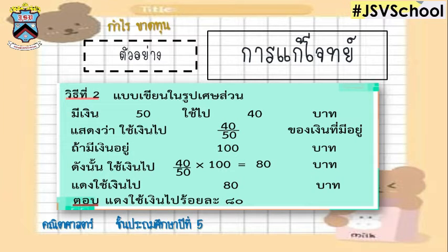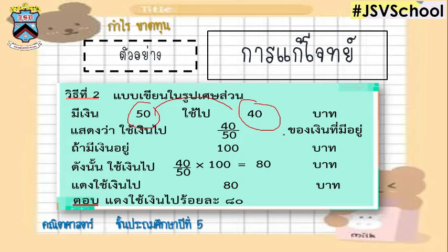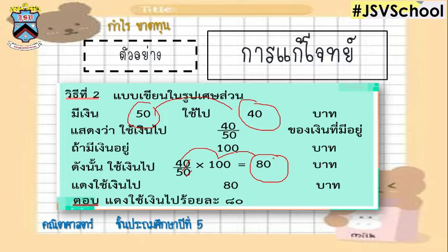เป็นการแก้โจทย์โดยใช้แบบรูปการเขียนเศษส่วนค่ะ ก็คือมีเงินอยู่ทั้งหมด 50 บาทและถูกใช้ไป 40 บาท นั่นแสดงว่าใช้เงินไปเป็นเศษส่วน 40/50 และมีเงินอยู่ 100 บาท จากนั้นเราจะคิด 40/50 × 100 = 80 บาท คำตอบปรากฏว่าจะได้เท่ากับ 80 บาทเท่ากันทั้ง 2 วิธี ตรวจสอบความสมเหตุสมผลปรากฏว่าข้อนี้ได้คำตอบ 80 บาทเท่ากัน นั่นแสดงความสมเหตุสมผลในคำตอบ จึงเป็นคำตอบที่ถูกต้อง